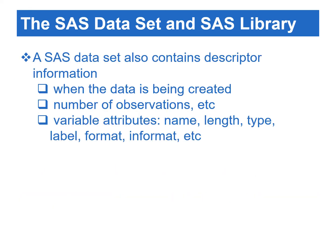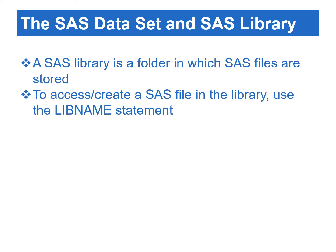The descriptor information of a data set includes information about the creation date of the data set, the number of observations, and the attributes of each variable, such as a variable's name, length, type, label, format, informat, etc. In SAS, the directory that stores SAS data sets is referred to as a library. To access or create a SAS file in a library, we need to begin with the libname statement.